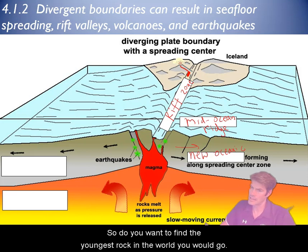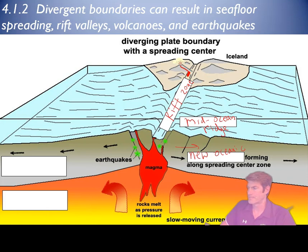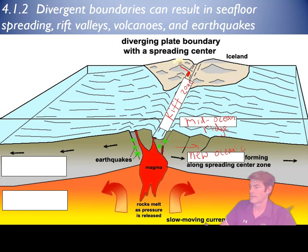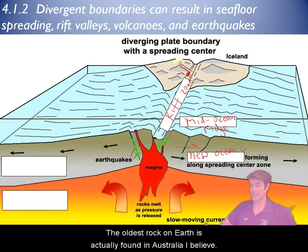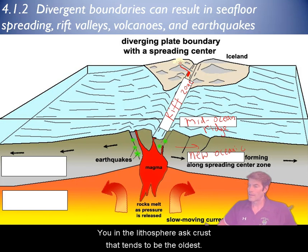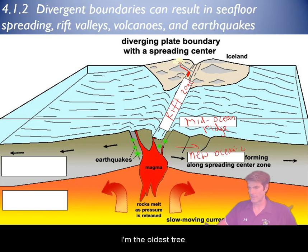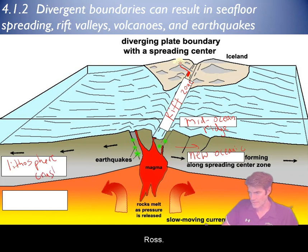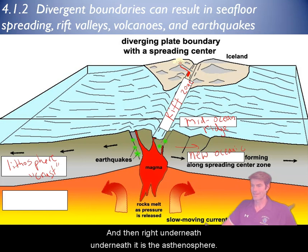If you want to find the youngest rock in the world, you would go to the Mid-Atlantic Ridge. Along each side of the rift zone, anywhere where there's magma cooling, that's going to be new rock. The oldest rock on earth is actually found in Australia. That rock floating on top in the lithosphere as crust tends to be the oldest rock.